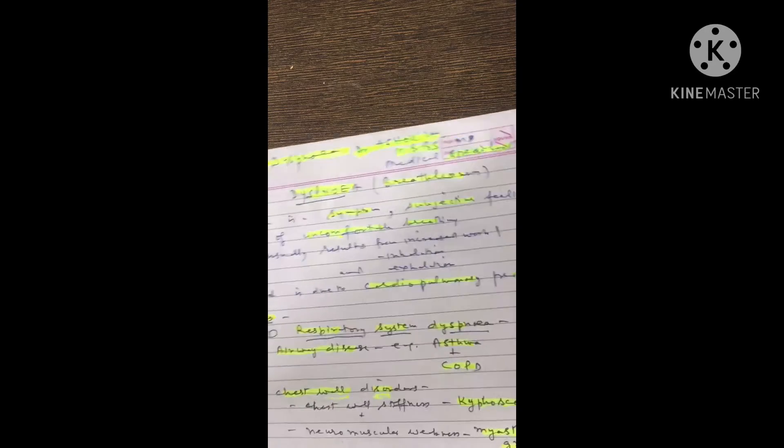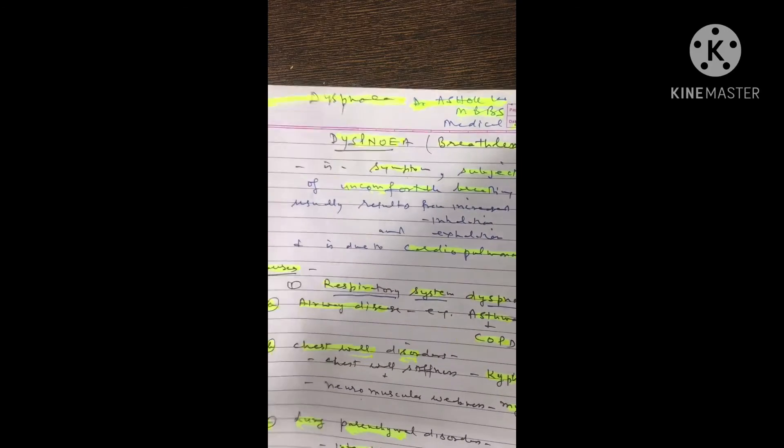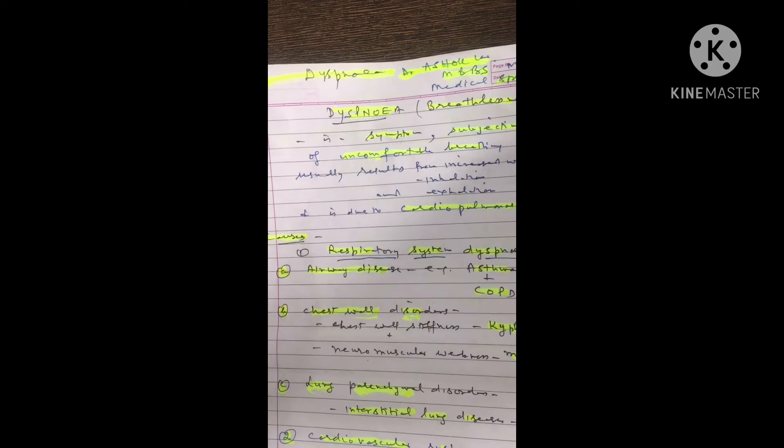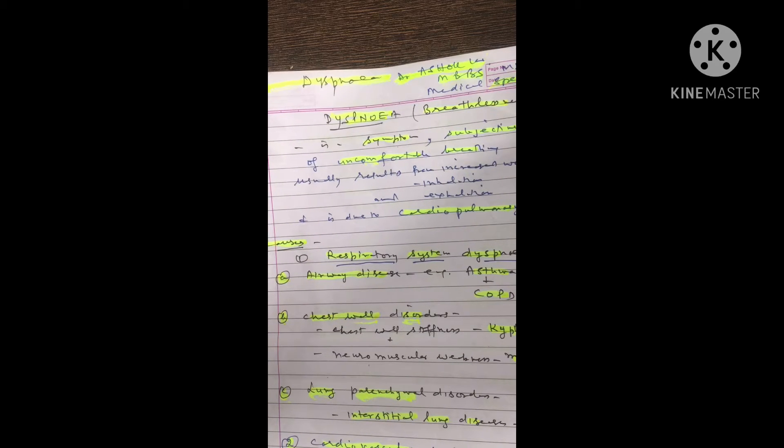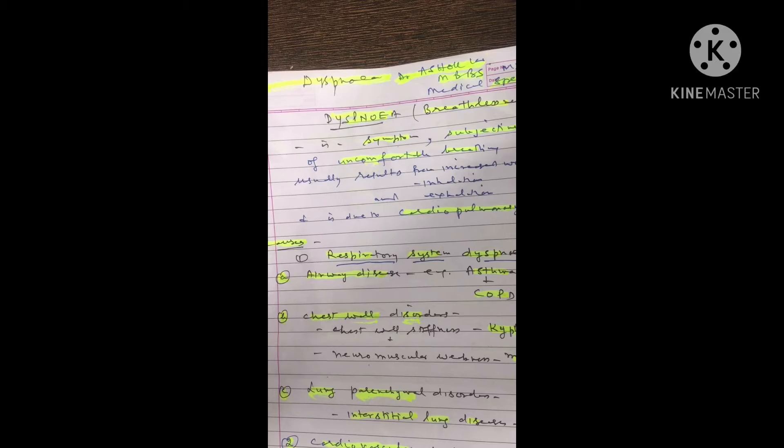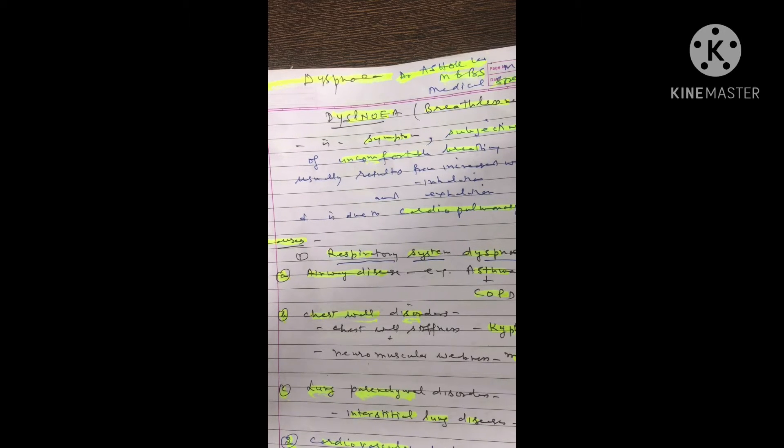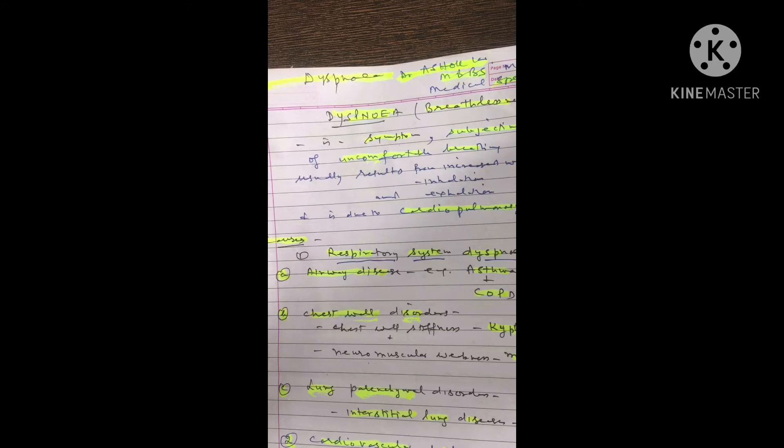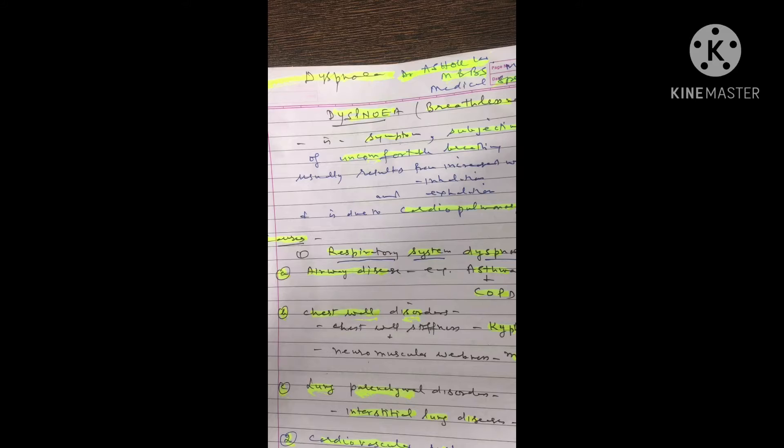First is respiratory system dyspnea, which has three parts: one, airway disease; number two, chest wall disorders; and number three, lung parenchyma disorders. Number one airway disease includes asthma and COPD. Number two, chest wall disorders include kyphoscoliosis with chest wall stiffness and myasthenia gravis with neuromuscular weakness.